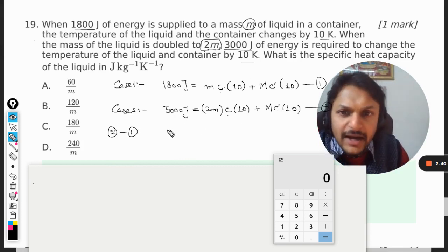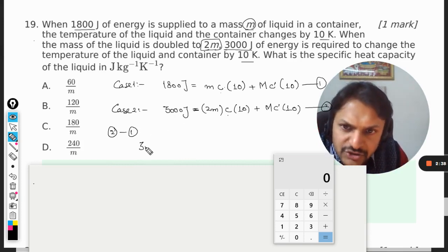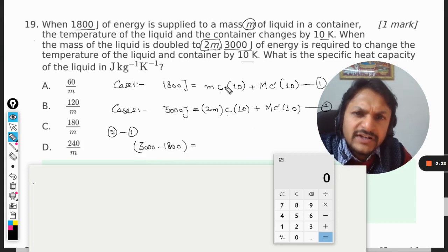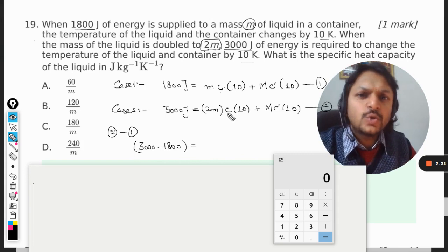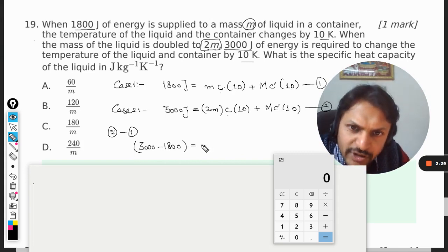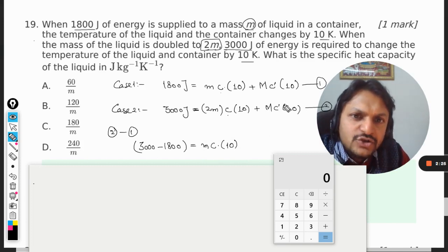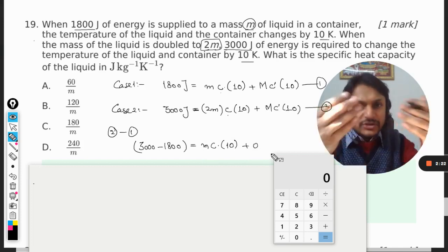So our left-hand side will be 3000 minus 1800, is equal to this minus this. So it is twice of this, simply, so it will come out to be m into c into 10, and these two will get cancelled, so it will be 0 because they are the same.